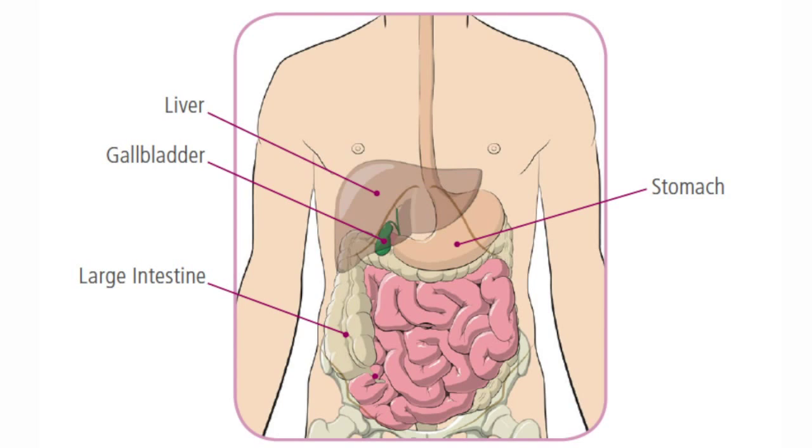The gallbladder is a pear-shaped organ that sits under the ribcage on the right side, just beneath your liver. Its main function is to store and concentrate bile, which is partly waste and partly digestive juices formed in the liver. Two tubes lead from the liver into the gallbladder, and the tube continues to join the intestine. From time to time when we eat, the gallbladder releases this bile, thereby getting rid of some of the waste and also helping with digestion of food.